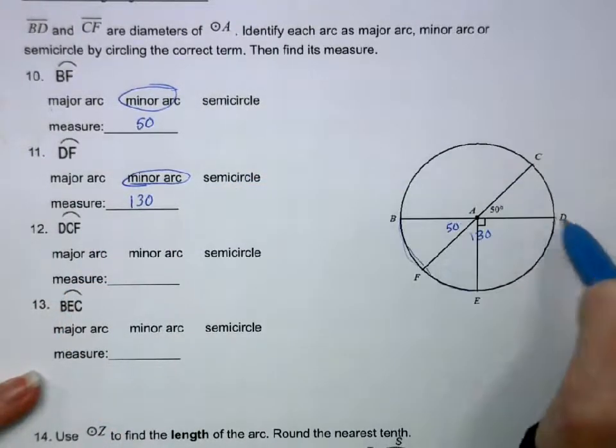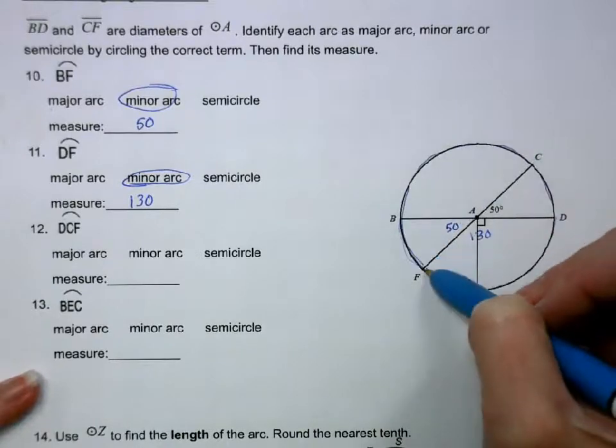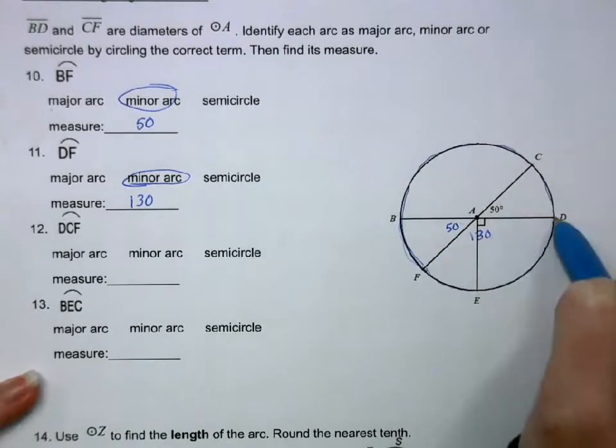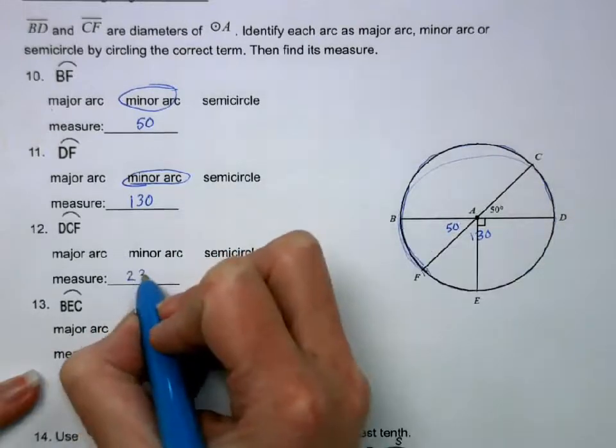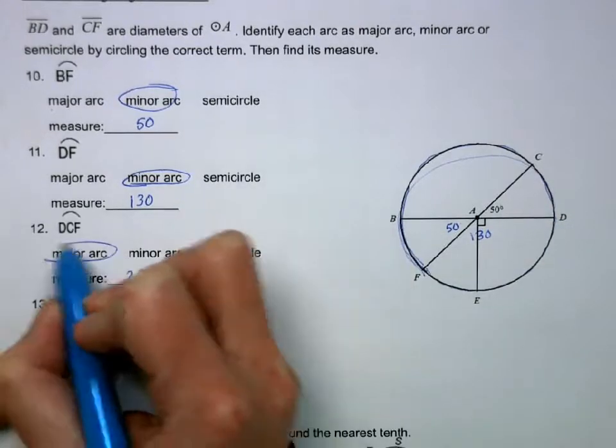DCF is going to be this arc here. Okay, so it's going to be 180 plus 50. So that's 230. And it is a major arc.